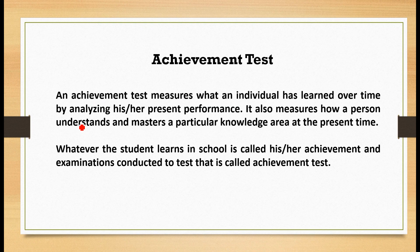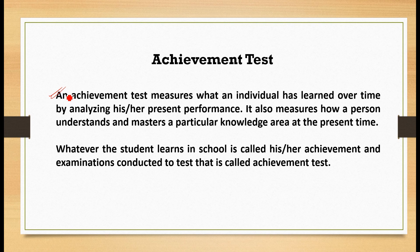An achievement test measures what an individual has learned over time by analyzing his or her present performance. It also measures how a person understands and masters a particular knowledge area at the present time. So this is a brief definition and explanation of an achievement test.